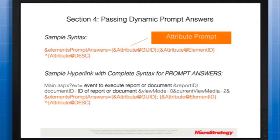Section 4: Passing Dynamic Prompt Answers. The MicroStrategy mobile app supports both attribute element prompts and value prompts. You can dynamically pass prompt answers to those prompts using the URL API. With dynamic hyperlinks, you can pass prompt answers to a prompted report or document to automatically answer the prompt, creating a hyperlink to a prompted report or document and answering the prompt at the same time. This enables users to drill from a document to another document or report, including specific data within the drill. To accomplish this, use the syntax for linking documents and append the syntax shown on screen.